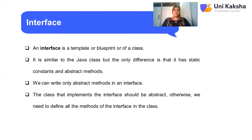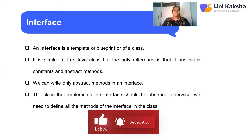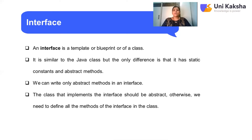The main difference is that an interface uses only static constants and abstract methods. Whereas in a class, we include almost everything — variable declarations, non-abstract and abstract methods. In interfaces, we can write only abstract methods, meaning no definition or body of the method is included. The class which implements the interface should be abstract; otherwise, we need to define all the methods of the interface in the class.